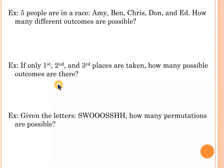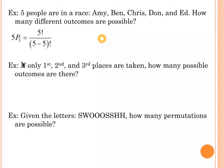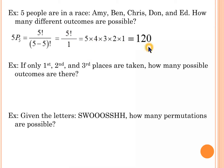Now let's practice a few permutation questions. Five people are in a race: Amy, Ben, Chris, Don, and Ed. How many different outcomes are possible? Since order matters, it's simply 5 factorial, or equivalently 5 pick 5. That gives 120 different ways.